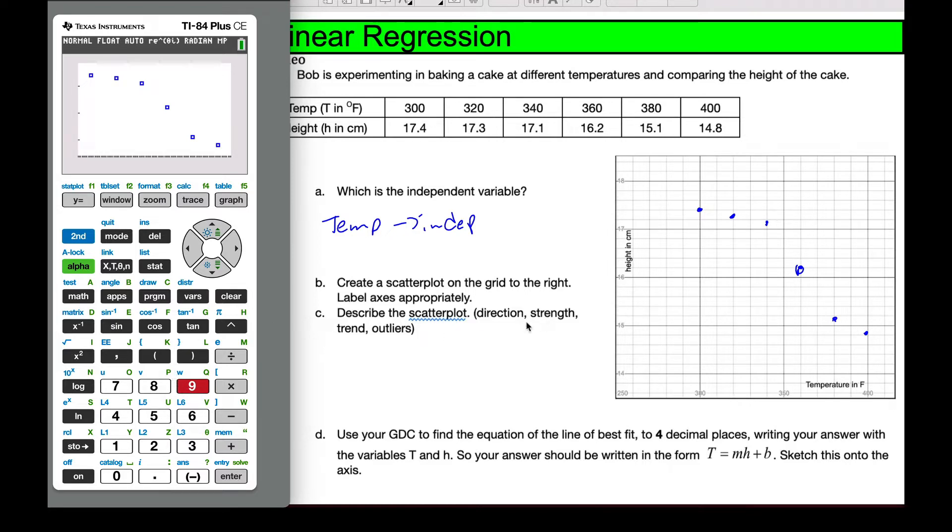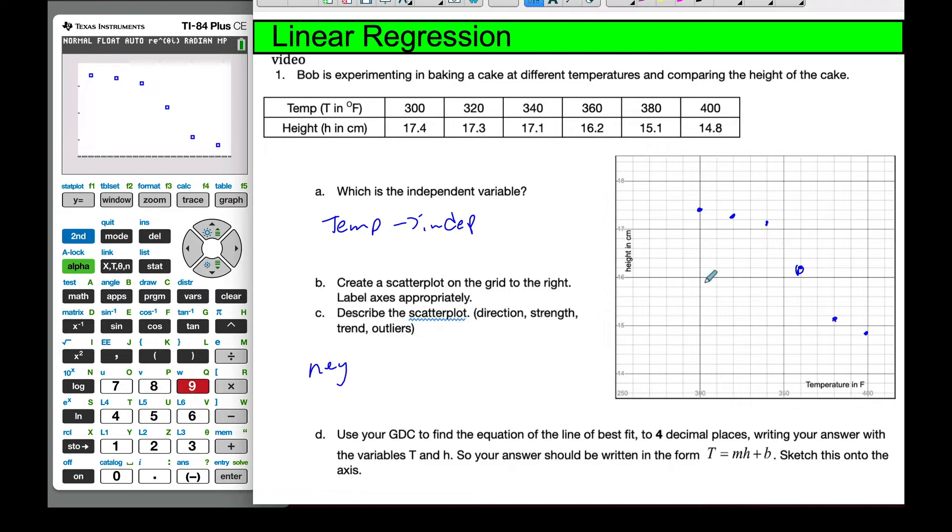And so I want to think about the direction, strength, trend, and outliers. Well, the direction, it is a negative direction because it's going downwards. The strength, it looks fairly strong. And it is a linear pattern, and there are no outliers when I look at these values here. So it looks fairly strong. There's no outliers, and there is a linear trend. There might be a bit of a curve there, but I can also think that there's a linear trend.